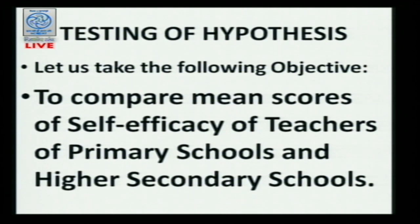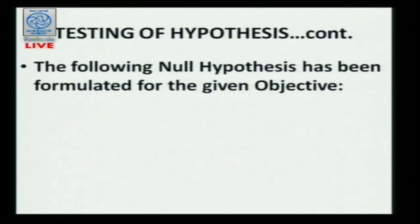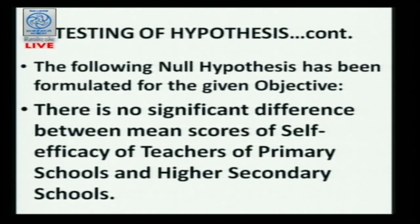Let us take one more example of the objective. The example is to compare mean scores of self-efficacy of teachers of primary schools and higher secondary schools. This is my objective, and for this objective I have formulated the hypothesis in the null form. The hypothesis in the null form is: there is no significant difference between mean scores of self-efficacy of teachers of primary schools and higher secondary schools.